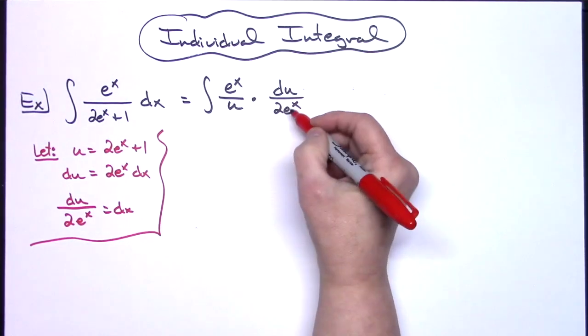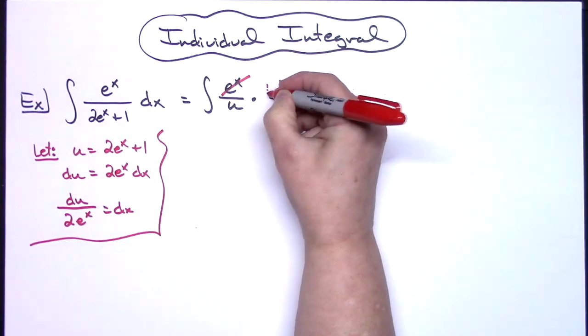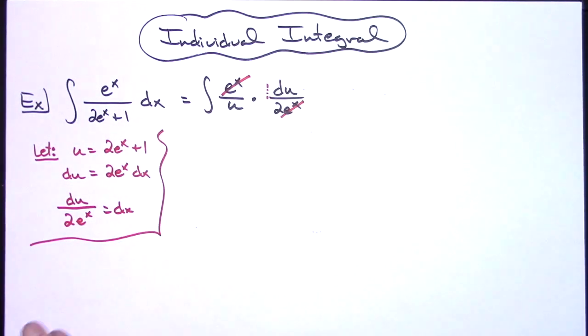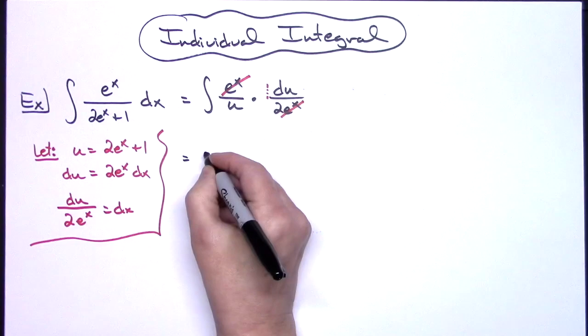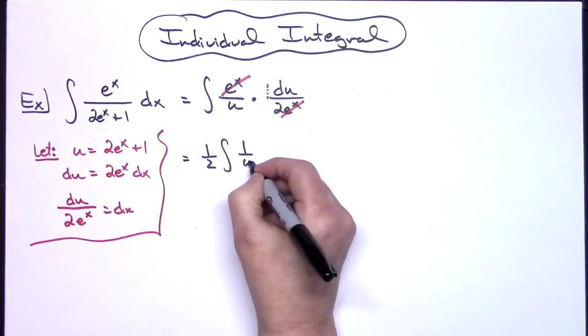That's going to allow me to cross out those e to the x's and then it's going to let me see that I can take this one half and pull it out in front. So then I'm going to have a one half the integral of a one over u du.